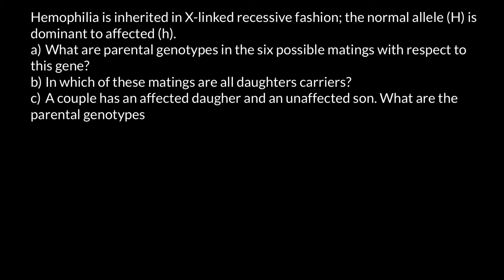Welcome to Nikolai's Genetics Lessons. Today's problem: Haemophilia is inherited in an X-linked recessive fashion. The normal allele capital H is dominant to affected small h. Instead of using capital H and small h to designate normal and defective alleles, I am going to use whole chromosomes to designate normal chromosomes carrying the normal allele and defective chromosomes carrying the defective allele.